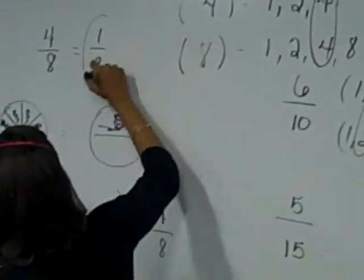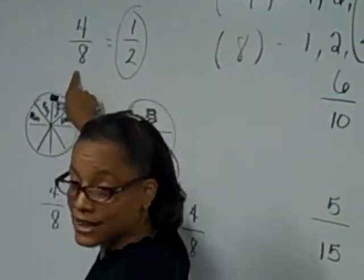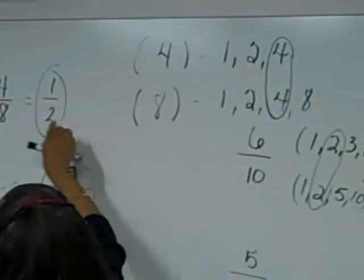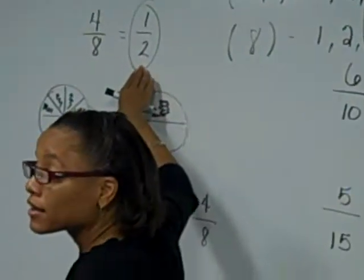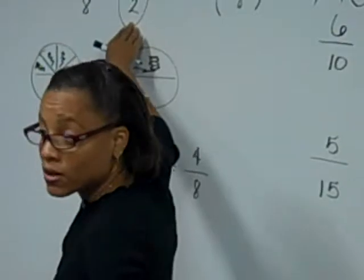Okay so we've just reduced four eighths to one half. And these two fractions are what? Are they equal? Yes. Exactly. Very good Bria. They're equivalent.